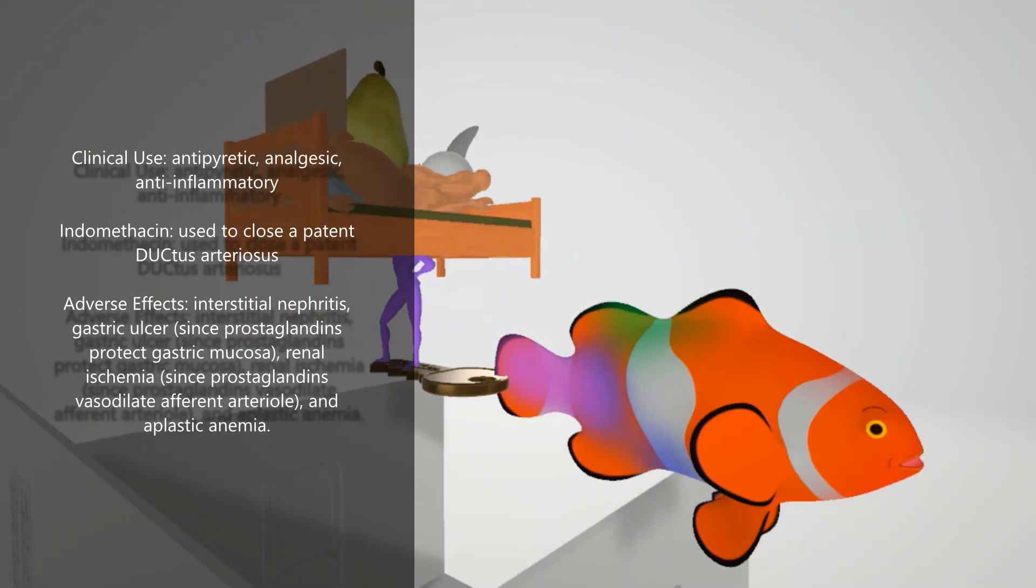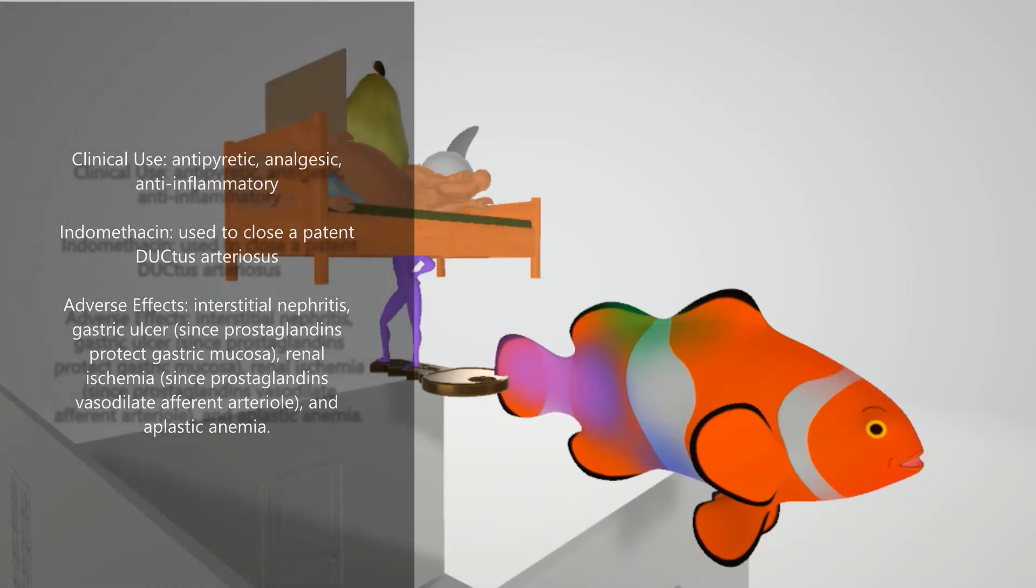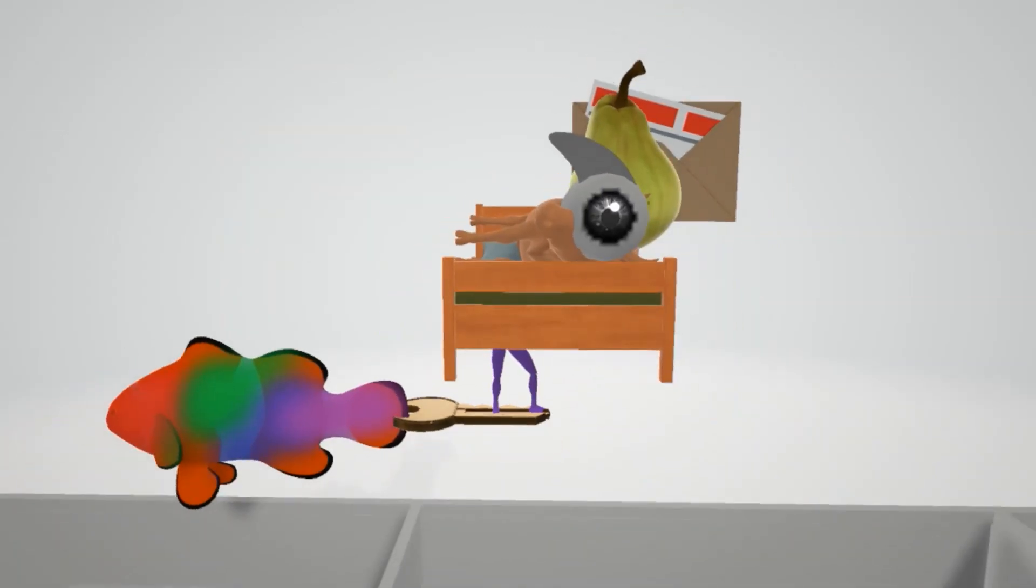Adverse effects of these drugs include interstitial nephritis, gastric ulcer, renal ischemia, since prostaglandins are responsible for vasodilating the afferent arteriole, as well as aplastic anemia. I hope you enjoyed this scene on the NSAIDs. Stay tuned for our next video in pharmacology.